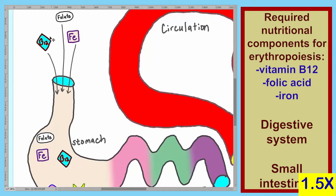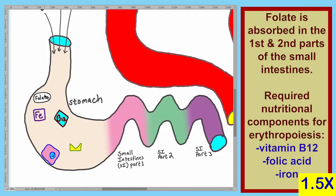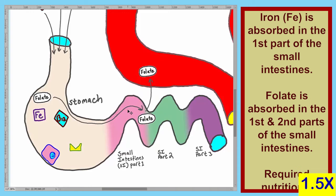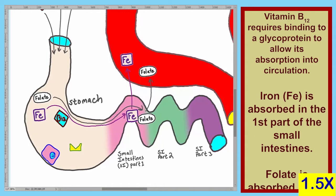Shown here is the intake of vitamin B12, folate, and iron. Once in the stomach, the folate travels to the first and second parts of the small intestines and is absorbed into the bloodstream. The iron travels to the first part of the small intestines and is absorbed into circulation.